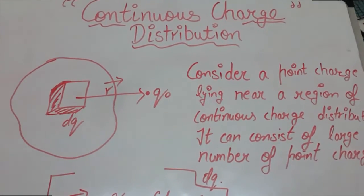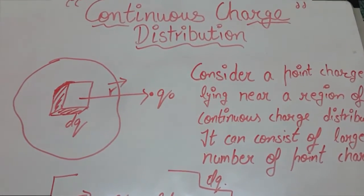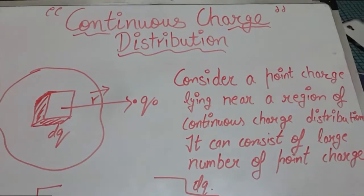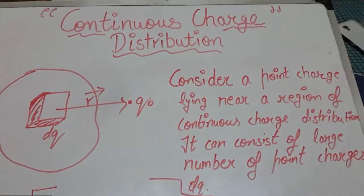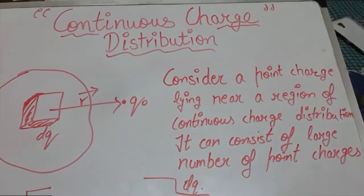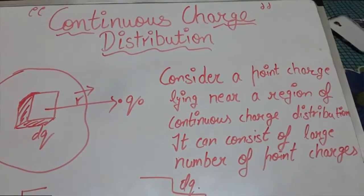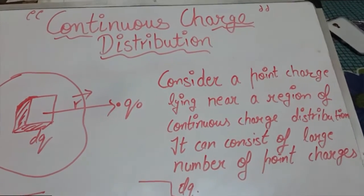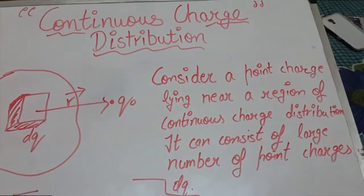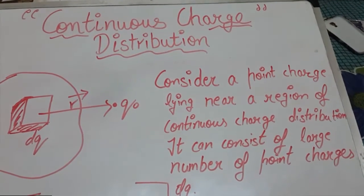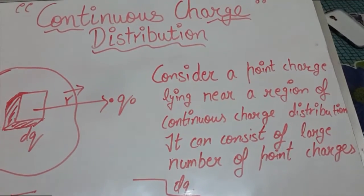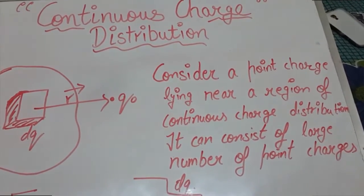Hello guys, today we will talk about continuous charge distribution. Till now we have talked about point charges, multiple charges, but in practical life we deal with charges much greater in magnitude than the charge on electron or atom. So we can ignore the quantum nature of charges and imagine the charge which is spread in a region in a continuous manner. Such a charge distribution is known as continuous charge distribution.